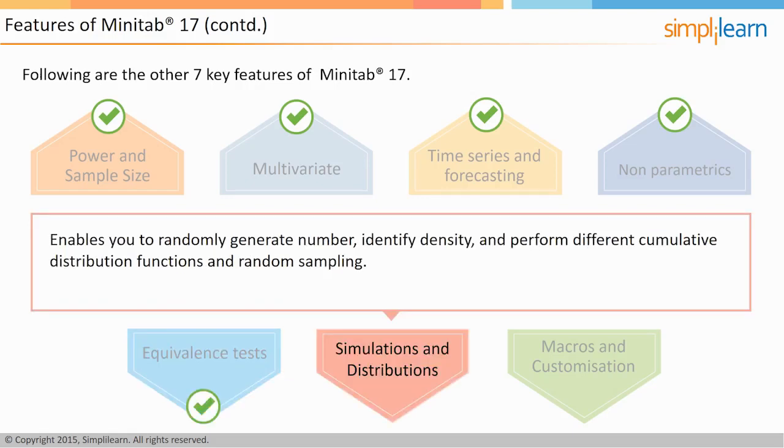Number six is simulations and distributions. Through this feature, you can randomly generate numbers, identify density, and perform different cumulative distribution functions and random sampling.